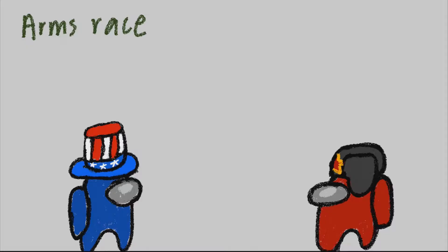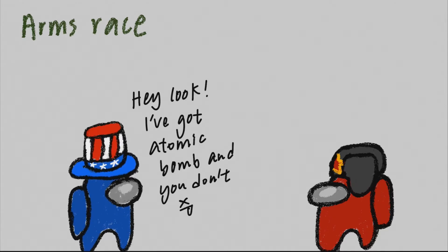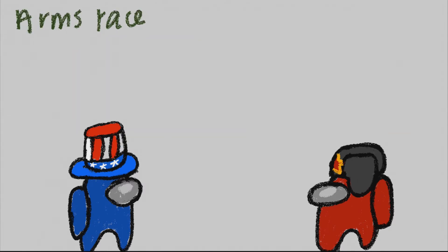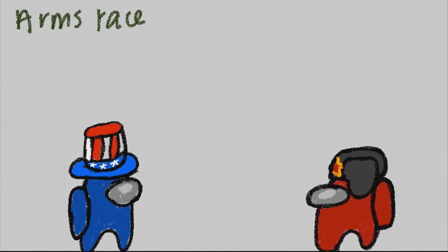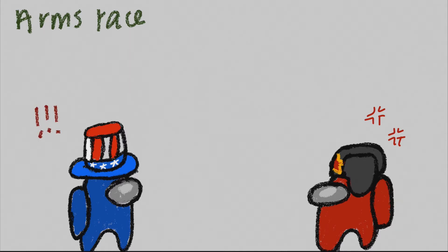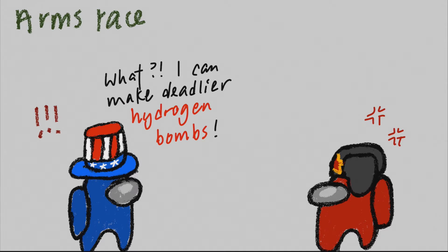Then, how did they fight? They fought in five ways. Number one: arms race and space race.